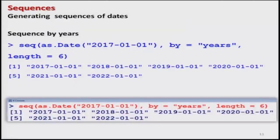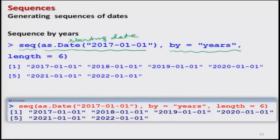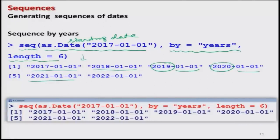Now let us get the same data with respect to years. I write seq with starting date 1st January 2017, by='year', and length.out=6. That means the values start from 1st January 2017 and go for 6 years at an interval of 1 year. The outcome is 1st January 2017, 2018, 2019, 2020, 2021, and 2022.